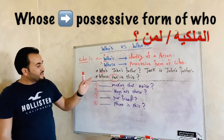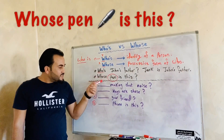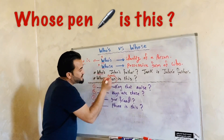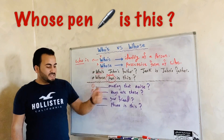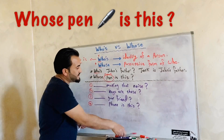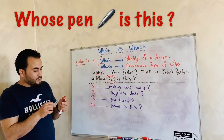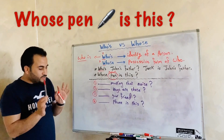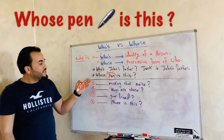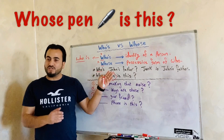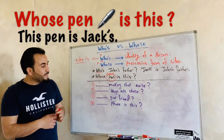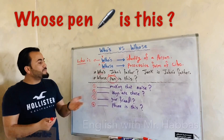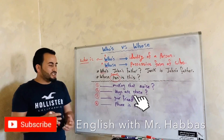Let's see this example. Whose pen? Here, pen is the noun. Whose pen is this? I have here a pen — I don't know if it's Jack's or if it's John's. So I am asking: whose pen is this? I think it's Jack's. This pen is Jack's. This pen is John's.